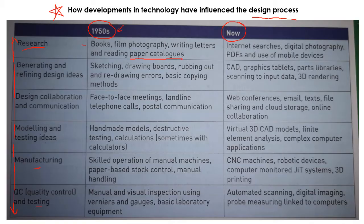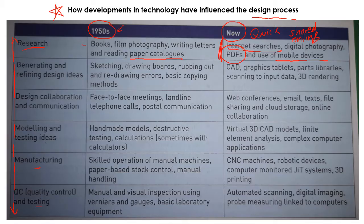You were very limited to what you could find depending on the resources you could access. But now we've got the world at our fingertips. We have Internet searches, digital photography that can be easily shared, and all of this can be shared and accessed online. We have the use of mobile devices which makes all of this super quick and easy to access. PDFs and online documents mean things have changed quite a bit - the Internet being the massive thing that has influenced our ability to carry out research.